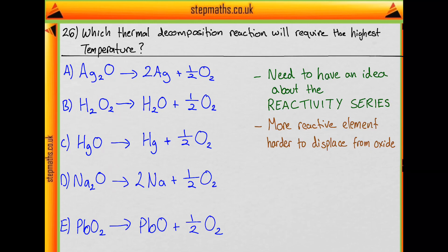And you can see from these five reactions that we do have a group 1 element, and that's sodium. So sodium here will be our most reactive element. So it will be the hardest to displace from its oxide, i.e. it will require the highest temperature for this reaction to happen. So our answer here is D.